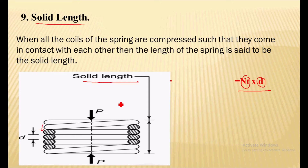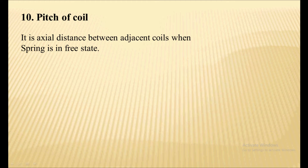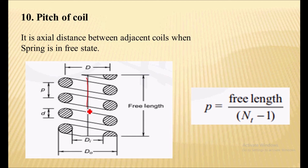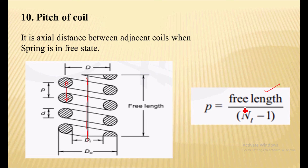The next term is the pitch of a coil. It is the axial distance between adjacent coils when the spring is in a free state — that is, when no load is acting on the spring. Pitch of the coil is given by: free length divided by (N_t minus 1), where N_t is the total number of coils.